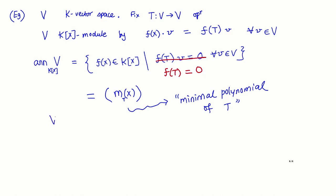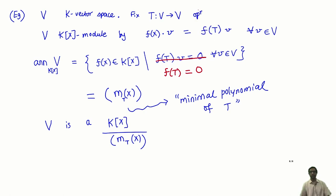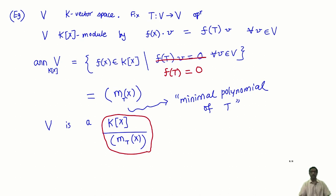So V is actually a module over K[X] modulo any ideal contained in Ann(V); in particular, it is a module over K[X]/(m_T(X)), where m_T(X) is the minimal polynomial of T. In some sense, properties like diagonalizability and many other linear algebraic properties come from the structure of this ring. For example, if the minimal polynomial factors into distinct linear factors, then the operator is diagonalizable. We will consider things like that in the problem sessions.